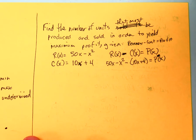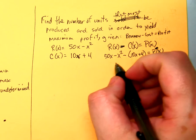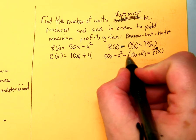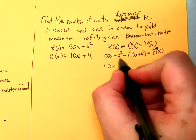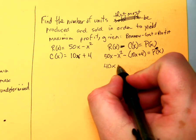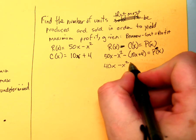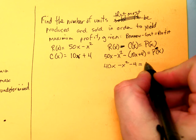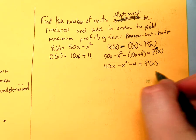Everybody okay with that? Alright, so simplify this. 50X minus 10X is 40X. Do I have an X squared? Well, just that one, so there's nothing else. Minus 4 is equal to P of X. Alright, absolutely.